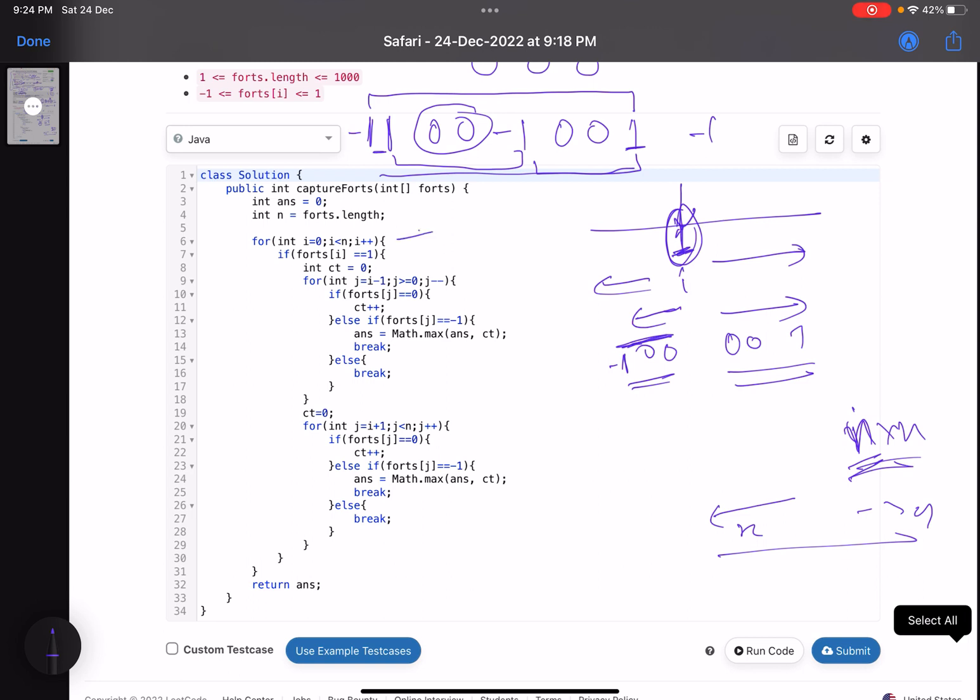I've started traversing. If forts[i] equals 1, that means it's my fort, I can rearrange it. Count equals 0. Let's move in left direction. This is the logic for left direction. I try moving in that direction. If forts[j] equals 0, count++.